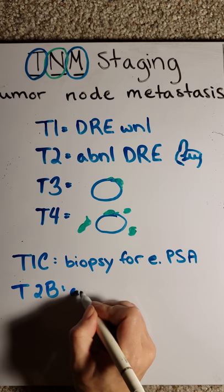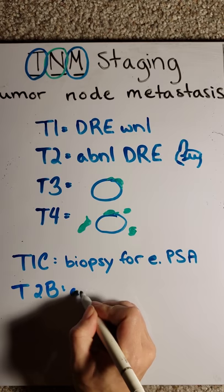T2b means the tumor can be felt on DRE and involves more than 50% of one side of the prostate. Less than this is T2a, and more is T2c.